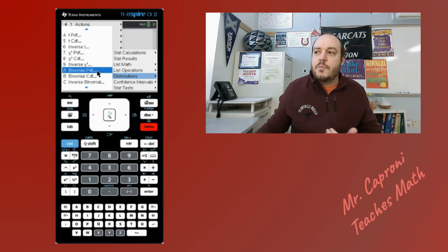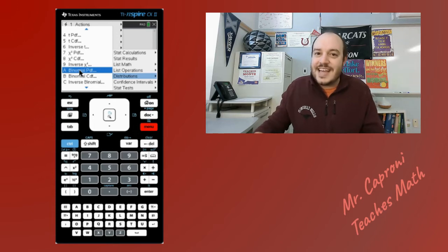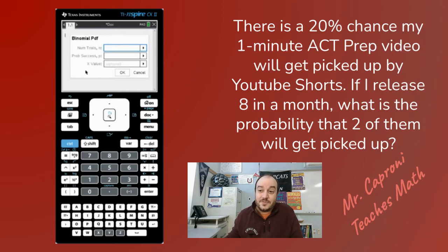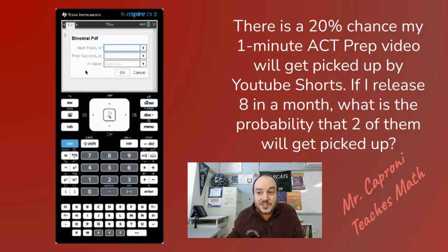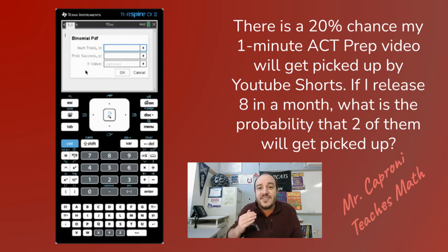We're going to start with binomial PDF since the first example involves exactly one number. The question says: there's a 20% chance a one-minute ACT prep video will get picked up by YouTube Shorts. Every Tuesday and Thursday I release an ACT prep video with a practice problem and solution in 60 seconds or less — go hit subscribe if you want to raise your ACT score. If I release eight of those in a month, what is the probability that exactly two of them get picked up?